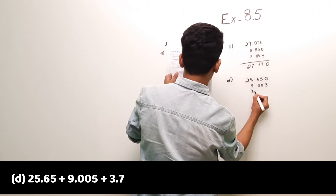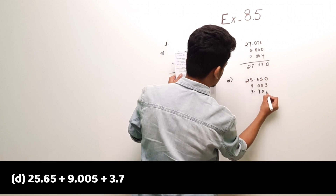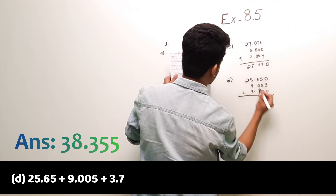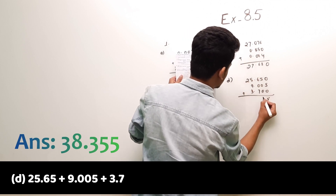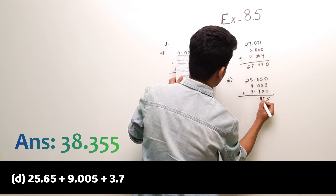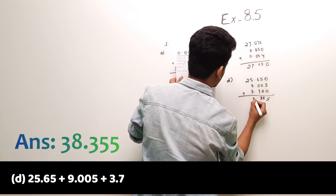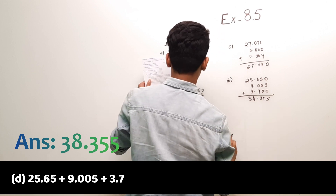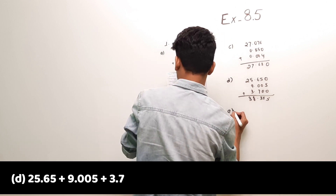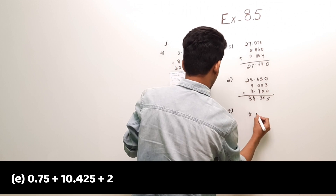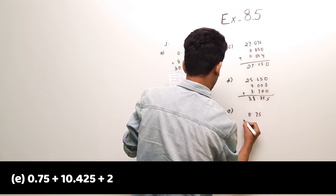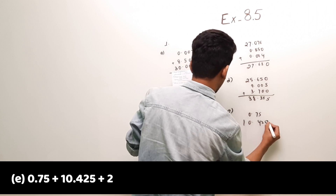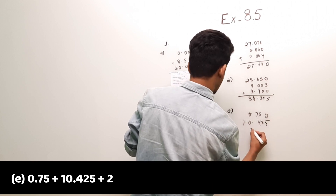Part (d): 25.65 plus 9.005 plus 3.7. Working through the addition — carry 1, carry 1 — the answer is 38.355.